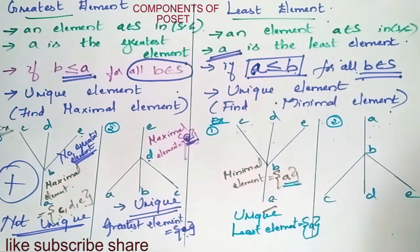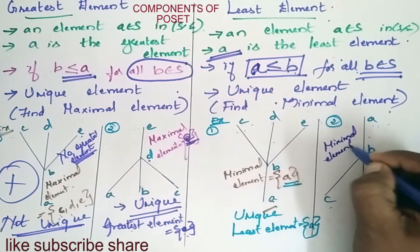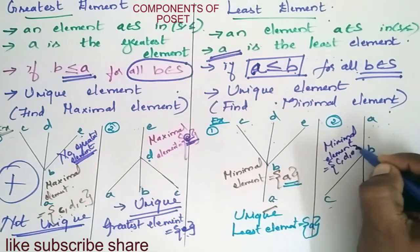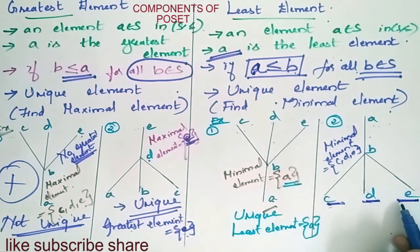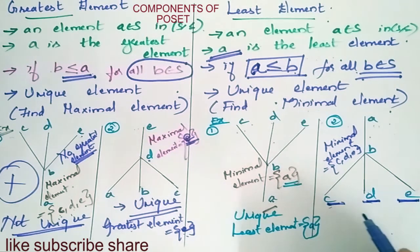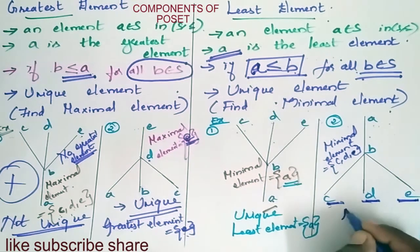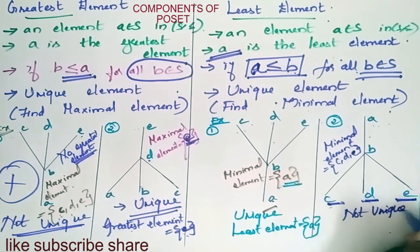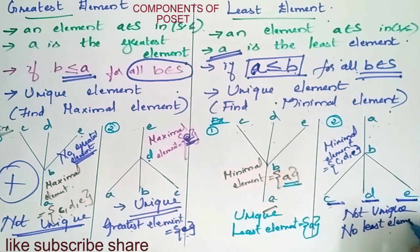In the second diagram, the minimal elements are C, D, and E — three elements at the same level. Since you have more than one element and cannot identify a single A that is smaller than all other elements in the set, it is not unique. Therefore, there is no least element.